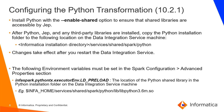The first step in setting up the transformation on 10.1 is to install Python using the enable-shared option to ensure the shared libraries are accessible by JEP. Once Python, JEP, and any other third-party modules are installed, all files must be copied to the services shared Spark Python folder in the Informatica installation directory on the DAS machine. After completing this, a DAS restart is required for the changes to take effect.